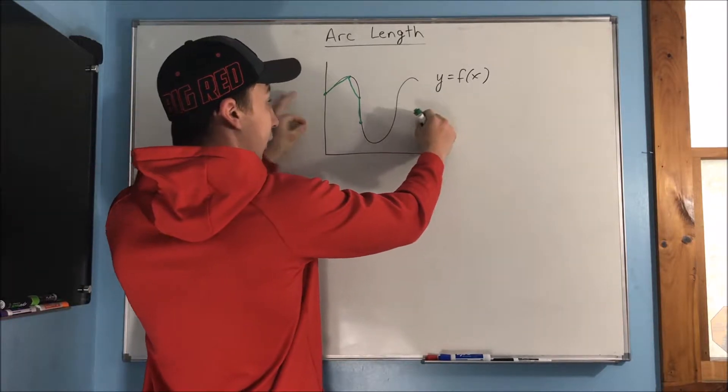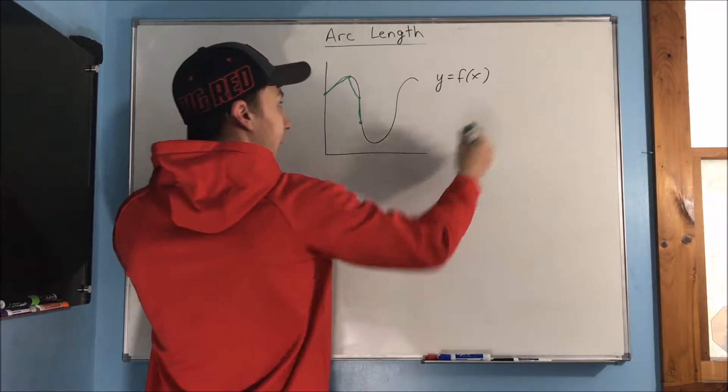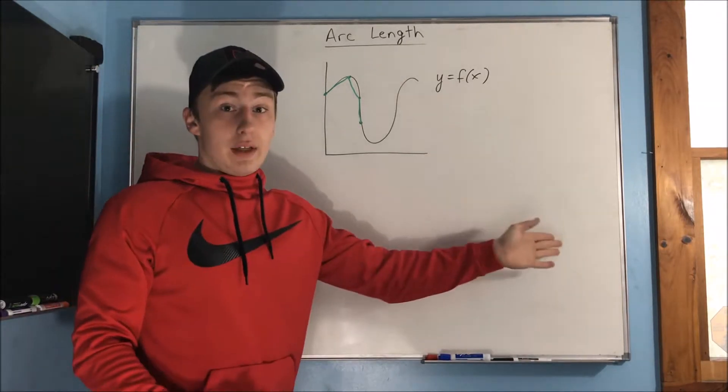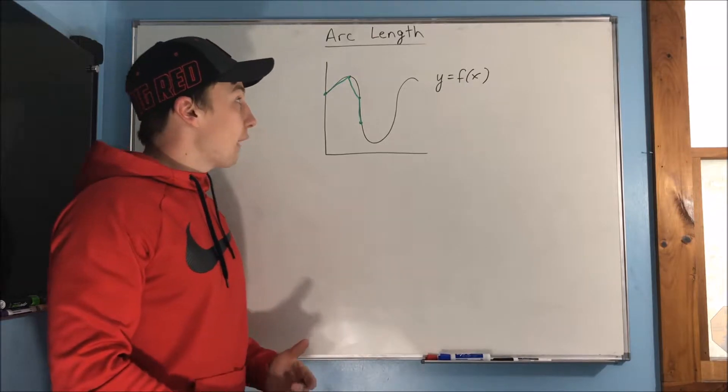So if we were to pull it flat, right, if we were to stretch it out and pull it flat, then the arc length is the total distance of that line. Okay, now how do we find this?